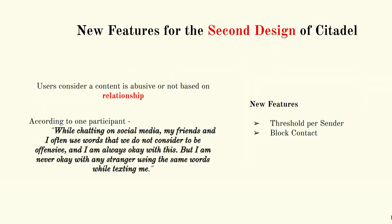Now we will see the new features for the second design of Citadel. From the evaluation of the first design, we found that users consider whether content is abusive or not based on their relationship with the sender. According to one participant, some words are offensive when said by strangers, but may not be offensive when said by friends or relatives.